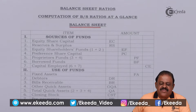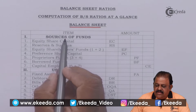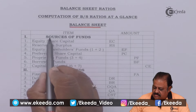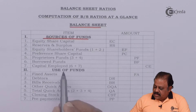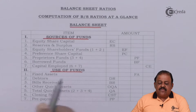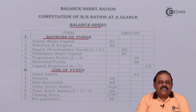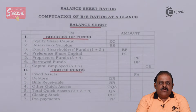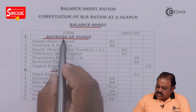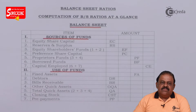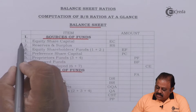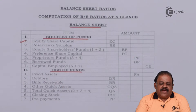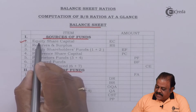First we'll start with the balance sheet. In the vertical arrangement of the balance sheet, the first part is called sources of funds and the second part is called use of funds or application of funds. Sources of funds should be equal to use of funds, that is application of funds. In sources of funds, the first item is shareholders' fund, which includes share capital — equity share capital and preference share capital.